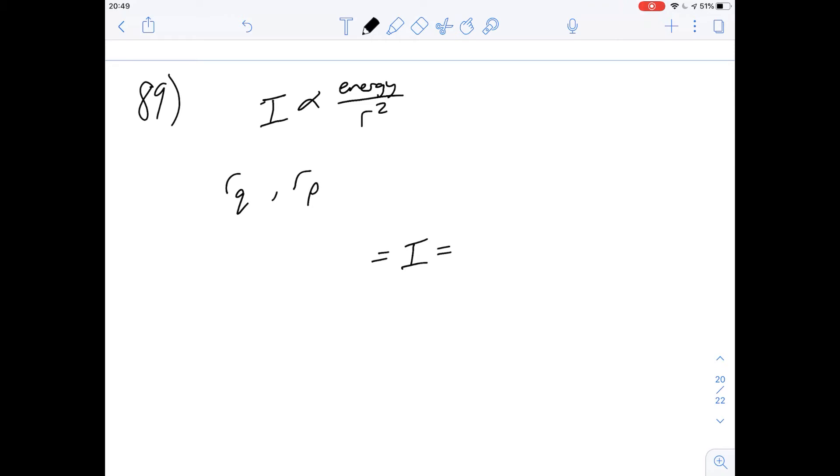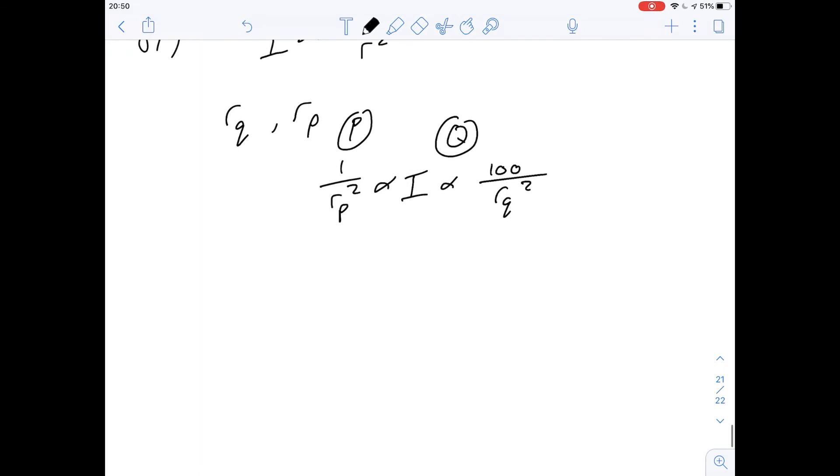So I'll write that in the middle. And we can say that's going to be equal to, and let's just do P and Q on both sides. So if we do P on this side and Q on this side, we can see the intensity is going to be, and I'll write proportional just to be as correct as I can be. So for P, we've got an energy of one relative to Q, and then we have a radius of RP. And on Q side, we've got 100, I'm sorry, this is going to be RP squared, and it's going to be 100 over RQ squared.